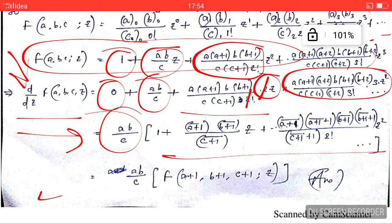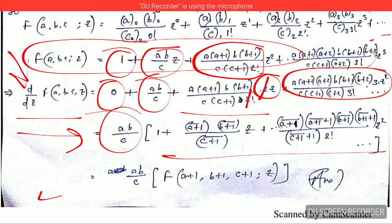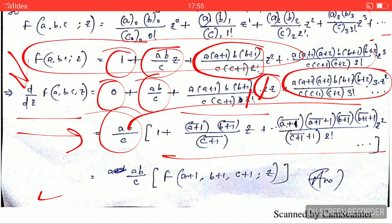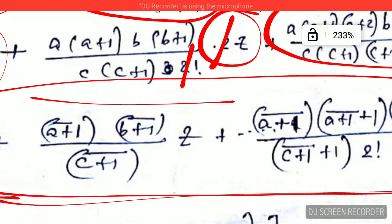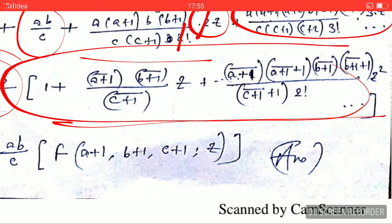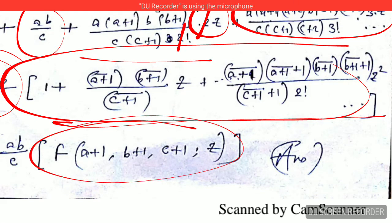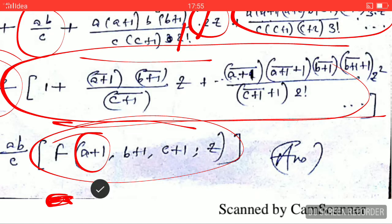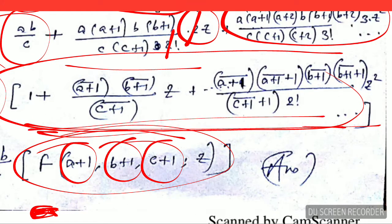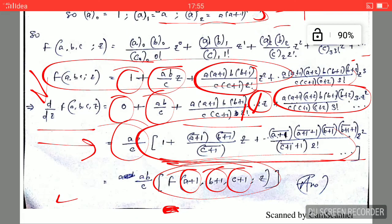Now if you clearly look at this point, then you can find that this will form the Gauss hypergeometric function with the variable a as a plus 1, b plus 1, and c plus 1, as you can see that the series goes like that. It is very easy for you to understand this thing, so finally my answer is... So finally this is my answer. This is how the answer has come.